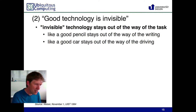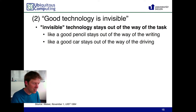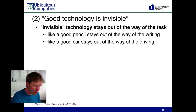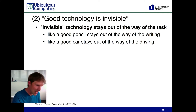Invisibility is the second way you could describe Ubiquitous Computing — it is an aim for computer science as a whole. Weiser says invisibility is very important because it is a way to create technology that allows you to perform a task in a better way, because invisible technology stays out of the way of the task.